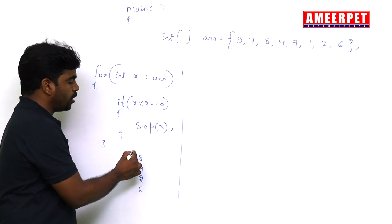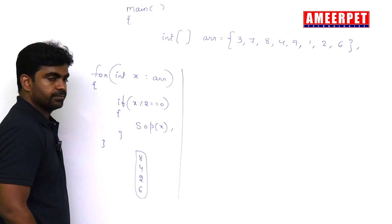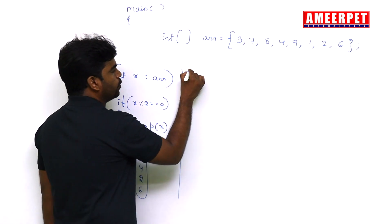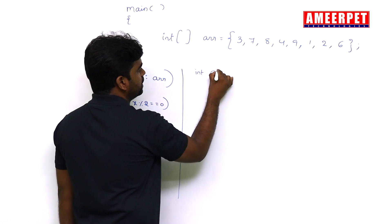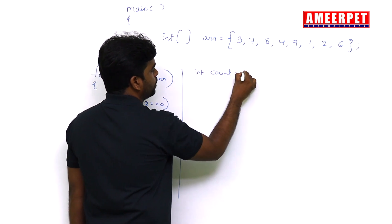Now I don't want to print, I just want to count how many are there. So take one count variable: integer count equal to zero.